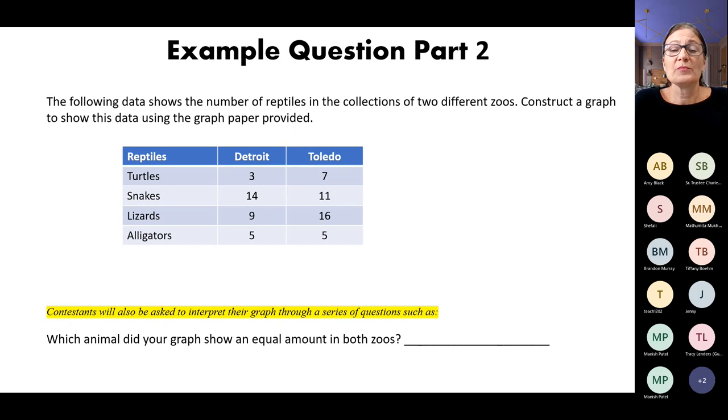And this is an example of how part two will look. So there is a set of data and a little story to explain the set of data. And then you'll be asked to graph that data on the graph paper. Additionally, there is anywhere from one to four questions on the same page that you write in, like a fill in the blank. So the idea would be you graph the data first, and then your graph will help you answer those multiple choice questions.